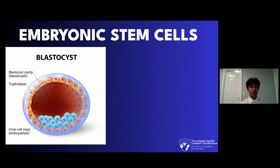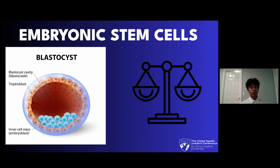One alternative to using adult stem cells is embryonic stem cells. Embryonic stem cells are totipotent and can be used to create any tissue. It is important to know that they are sourced from developing embryos, similar to the process of abortion. This brings up significant ethical concerns and is one of the major reasons as to why stem cell therapy is controversial.